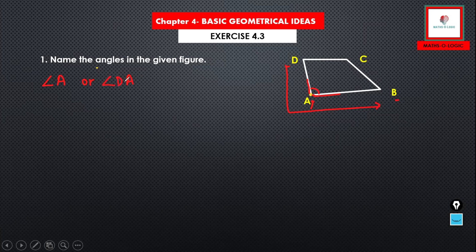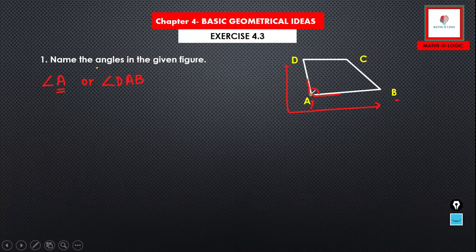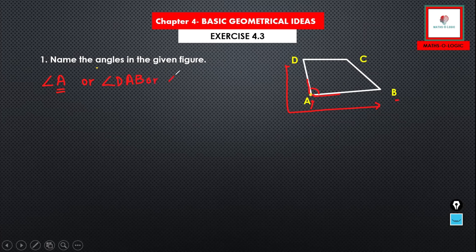So I can say angle D, A, B. I can say angle B, A, D. Starting from the middle, we have the vertex and the end. And I can say angle B, A, D. So, one is angle A.